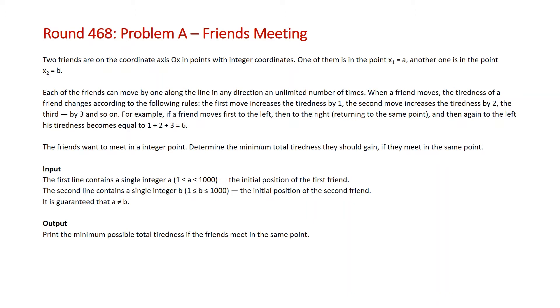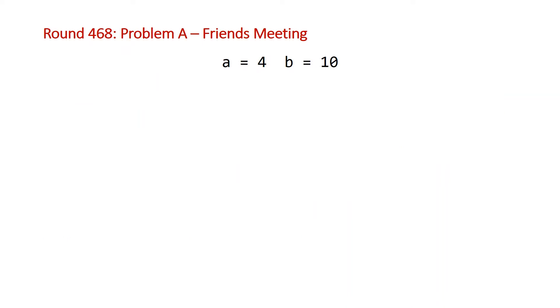So let's take a look at an example. In this example, A is equal to 4 and B is equal to 10. So if we look at this visually, we have a straight line, and we'll call A Jack and B Jill. So Jack is at position 4 and Jill is at position 10.